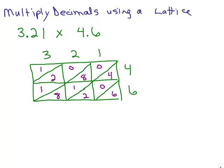And then we're going to take the numbers in the lattice along these diagonals because that's the ones, tens, hundreds, thousands, ten thousands if they're whole numbers.